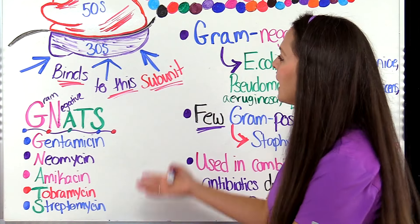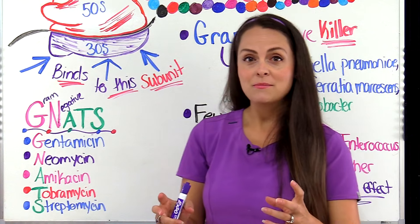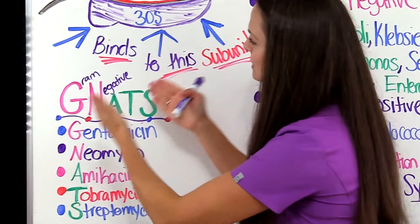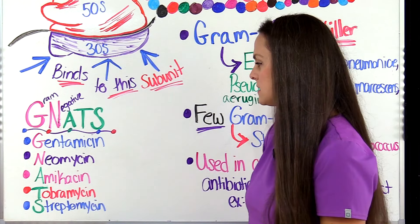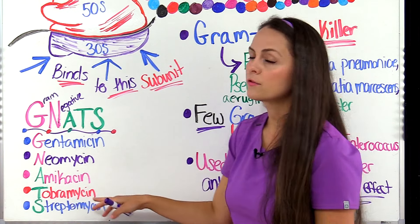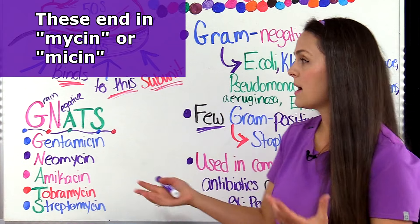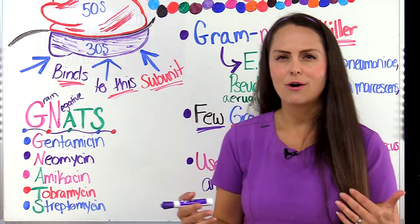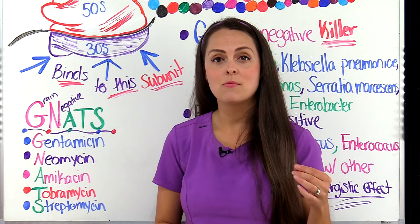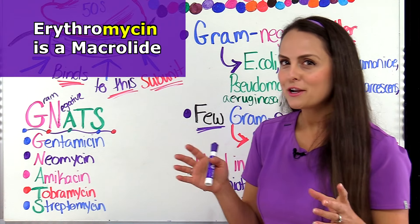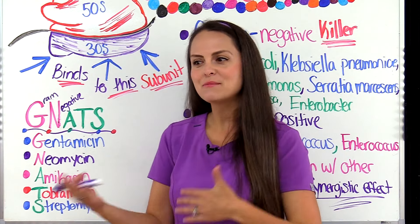To remember the medications included with aminoglycosides, remember the word GNATS — G-N-A-T-S. The G-N part helps you remember that aminoglycosides mainly target gram-negative microorganisms. G is for gentamicin, N is for neomycin, A is for amikacin, T is for tobramycin, and S is for streptomycin. These medications end in -mycin, but don't let that tip you off that it's always an aminoglycoside — some other antibiotic groups like macrolides also end in -mycin, such as erythromycin.